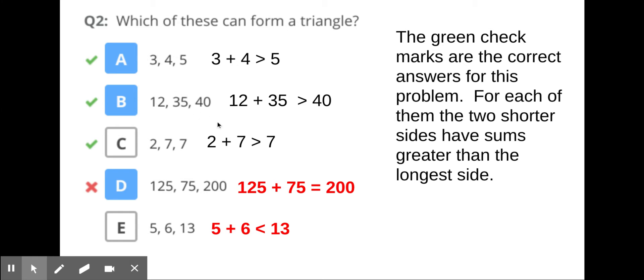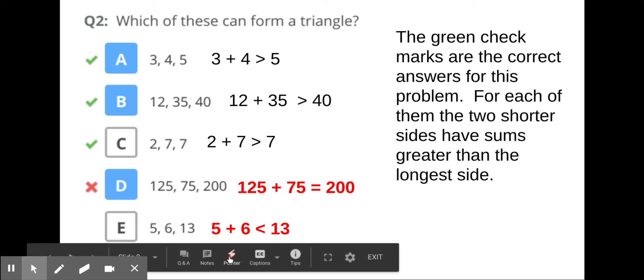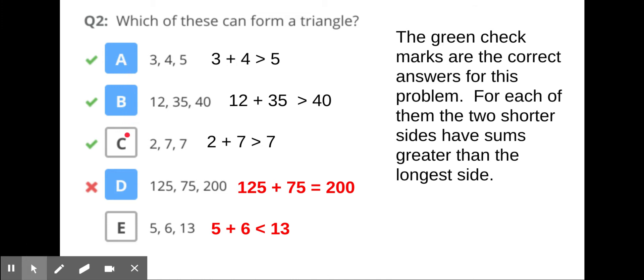2 plus 7 adds up to more than 7, so these are your three correct answers here. We can see how this works - these ones here work. Now if we look at D, D will not work. 125 plus 75